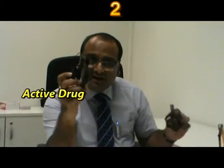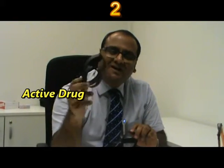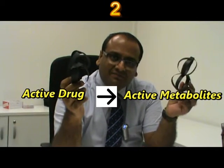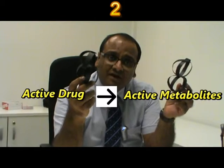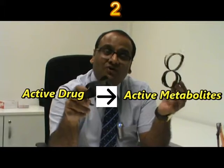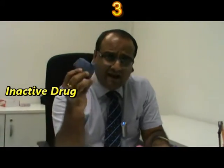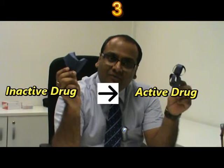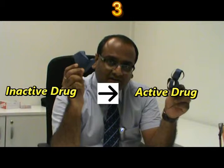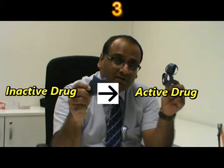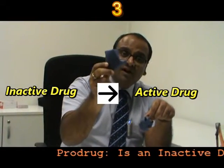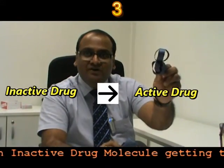The next possibility is that an active drug molecule produces an active metabolite — active to active. An example is the transformation of morphine to a metabolite known as morphine-6-glucuronide, which is also an active drug molecule. The third possibility is an inactive drug molecule getting transformed into an active molecule inside the body. This process is what we call a prodrug.